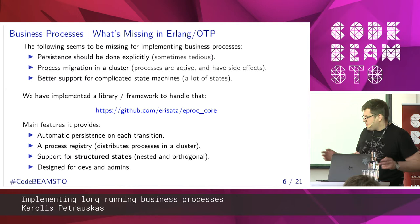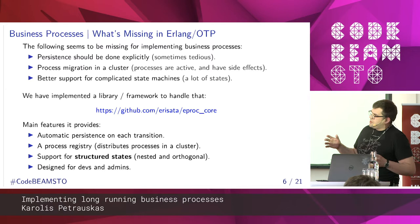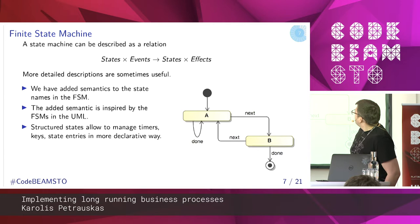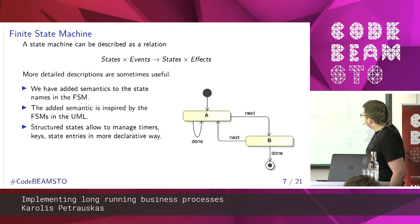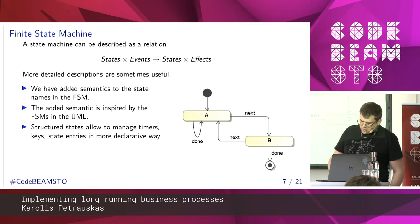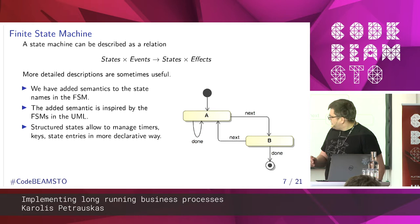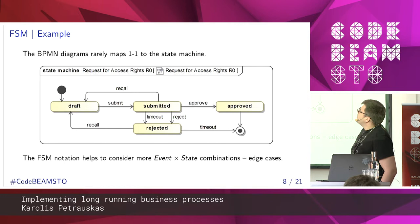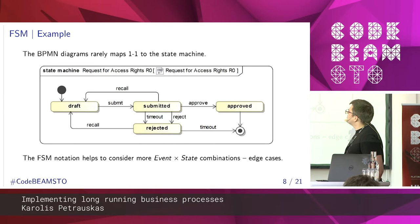And it supports structured states. Structured states are needed to handle situations when you have a lot of states — it's easier to handle them when they are grouped. We borrow a lot from UML to define the semantics around grouping those states. Just to introduce the notation: those are states, here are transition arrows, and here are triggers for the transitions between states. Side effects are not shown in diagrams like this. The same process we had previously is shown here as a state machine — the entity having states is a request for access rights, and that's the first revision.